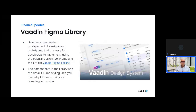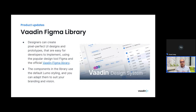Last but not least, I'd like to draw attention to the Vaadin Figma library, which designers can use to create pixel-perfect UI designs and prototypes. These prototypes are easy for developers to implement using the official Vaadin Figma libraries. The components in this library use the default Lumo styling, which you can adapt to suit your own branding and vision. The library includes typography, color, other visual styles, and configurable components that cover the same components available to developers.